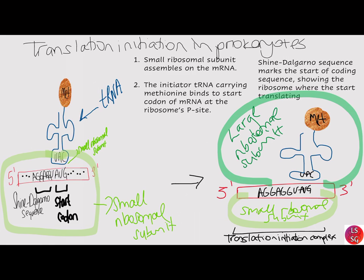In prokaryotes, there is an area near the 5' end of the messenger RNA molecule known as the untranslated region. This section is located between the first transcribed nucleotide and the AUG start codon of the coding region, and does not affect the protein amino acid sequence. This area contains a ribosome binding site that shows the ribosome where to start, called the Shine-Dalgarno box, named after the scientists who characterized it.